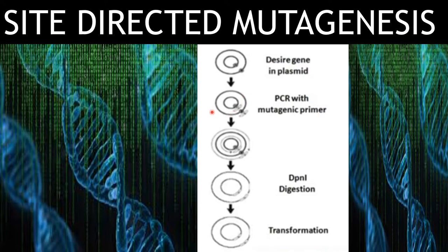After PCR, the gene will be amplified. The original gene, which consists of the undesirable gene, will be removed with the help of DpnI digestion. This enzyme will cleave the gene which is methylated; it doesn't cleave the gene which is inserted through the PCR primer, because those are not methylated. After DpnI digestion, this plasmid will be transferred to the bacteria through transformation for the multiplication of that plasmid.